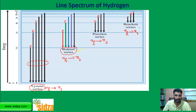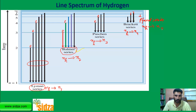The Pfund series is when an electron jumps from any higher shell to the fifth energy level, N5. For example, if the electron is in the sixth orbit, it goes down to the fifth energy level — that region is called the Pfund series, with any higher shell jumping down to N5.